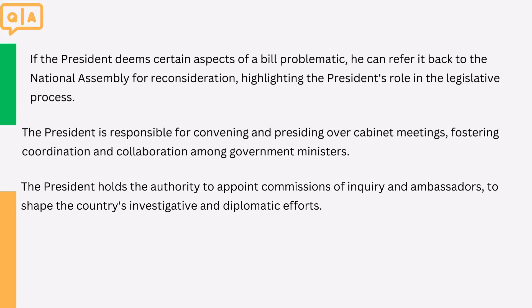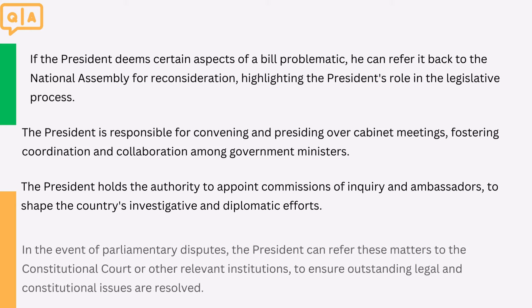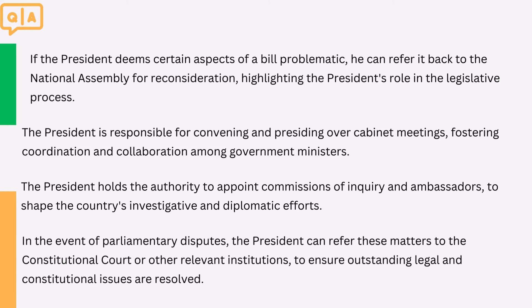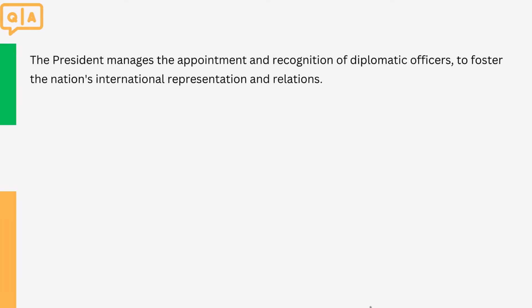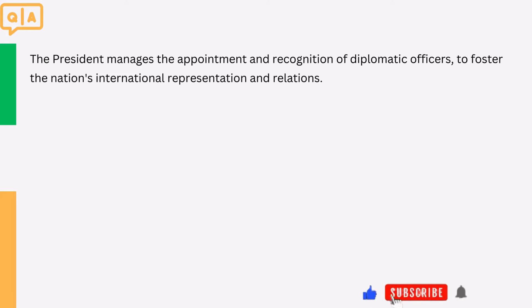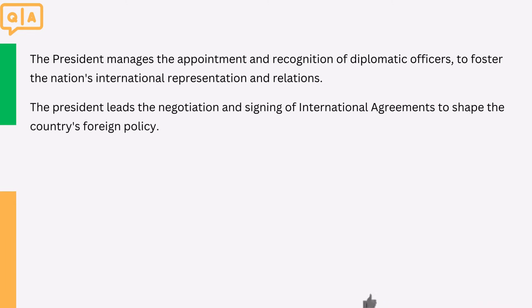4. The president holds the authority to appoint commissions of inquiry and ambassadors, to shape the country's investigative and diplomatic efforts. 5. In the event of parliamentary disputes, the president can refer these matters to the constitutional court or other relevant institutions, to ensure outstanding legal and constitutional issues are resolved. 6. The president manages the appointment and recognition of diplomatic officers, to foster the nation's international representation and relations. 7. The president leads the negotiation and signing of international agreements to shape the country's foreign policy.